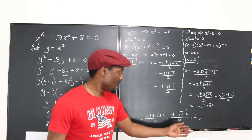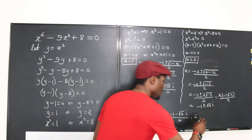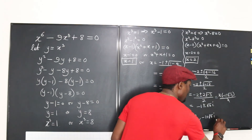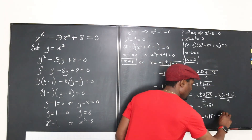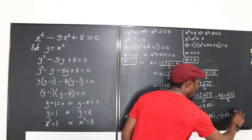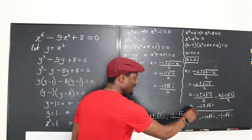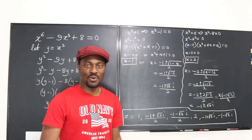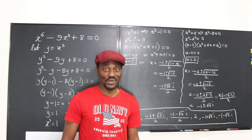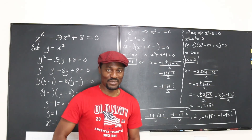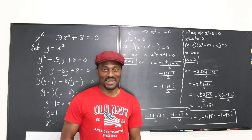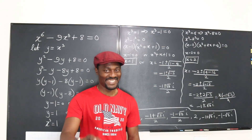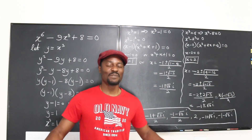So combining everything, these are all six answers from solving the sixth-degree equation: x equals 1, x equals 2, x equals (negative 1 plus square root of 3 i) over 2, x equals (negative 1 minus square root of 3 i) over 2, x equals negative 1 plus square root of 3 i, and x equals negative 1 minus square root of 3 i. Hope you learned something in this video — give it a thumbs up, leave a comment, and subscribe if you're not. I'll see you in the next video. Never stop learning, because those who stopped learning have stopped living.